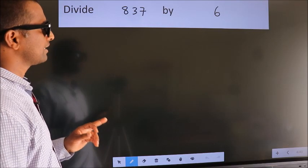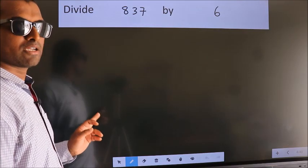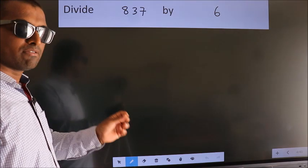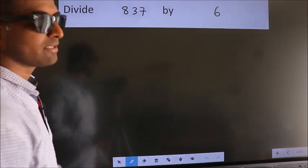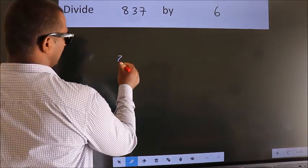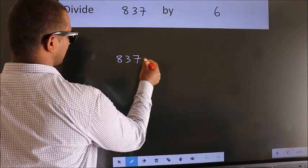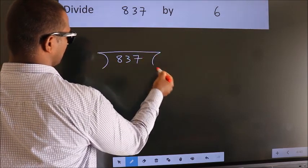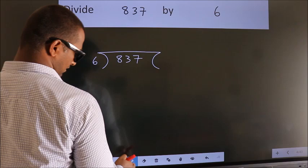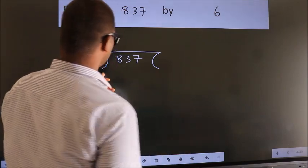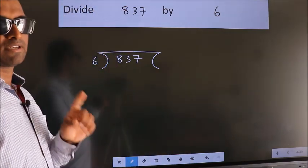Divide 837 by 6. To do this division, we should frame it in this way. 837 here, 6 here. This is your step 1.